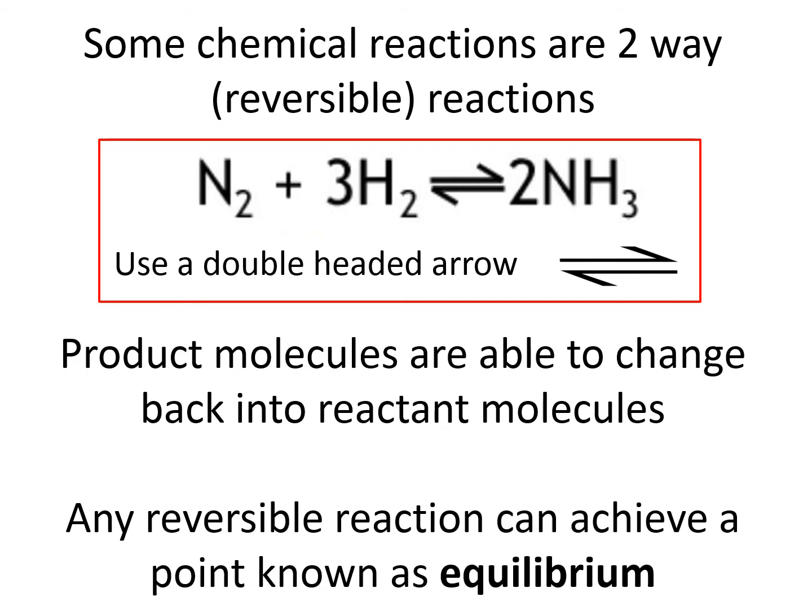So any reversible reaction, any reaction where the reaction can happen in both directions, can achieve a point known as equilibrium.